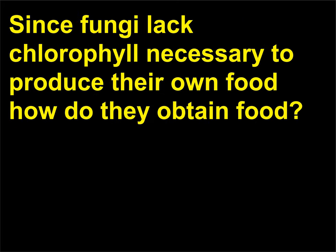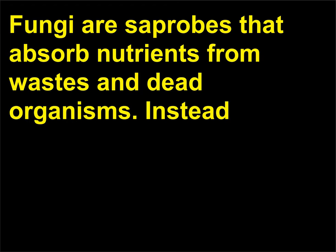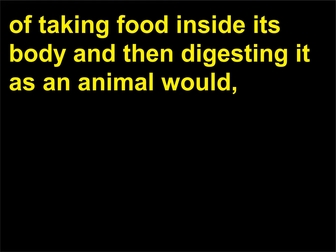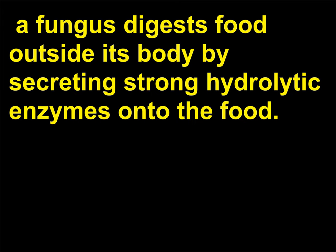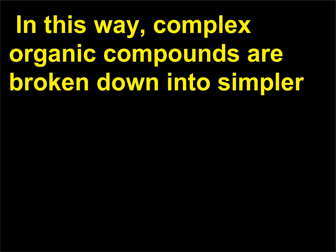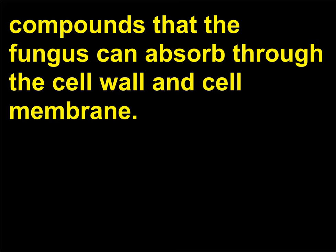Since fungi lack chlorophyll necessary to produce their own food, how do they obtain food? Fungi are saprobes that absorb nutrients from wastes and dead organisms. Instead of taking food inside its body and then digesting it as an animal would, a fungus digests food outside its body by secreting strong hydrolytic enzymes onto the food. In this way, complex organic compounds are broken down into simpler compounds that the fungus can absorb through the cell wall and cell membrane.